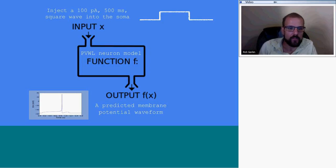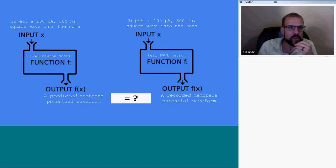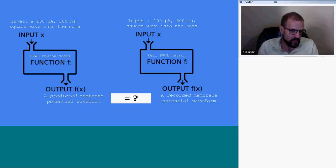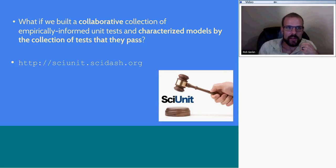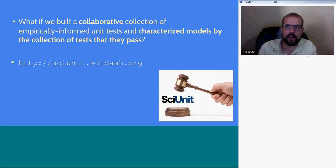In this case, the membrane potential would change in a certain way, showing an action potential at a certain time. What you can do is run the same experiment on the model as you do on the real neuron, and check to see if the predicted output of the model matches what you record in the experiment. So the idea is: what if we build a collection of data-driven unit tests and not only test our models with them, but characterize the performance of the model according to a suite of tests? How many of these tests does it pass? How well does it do on each test?